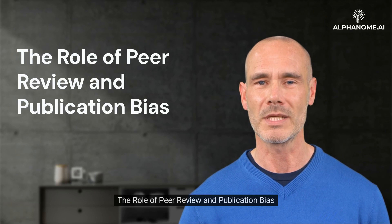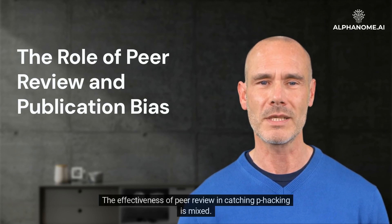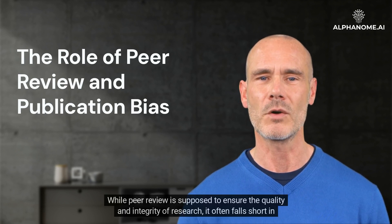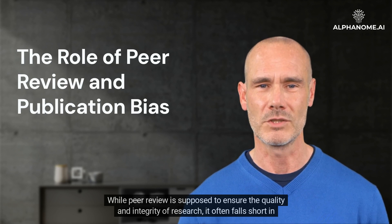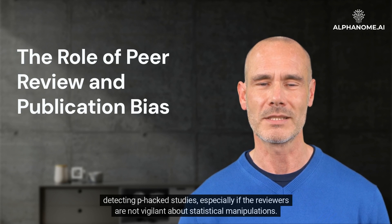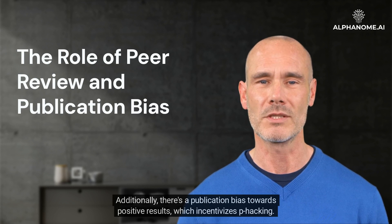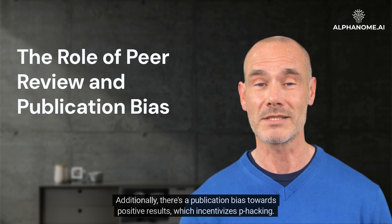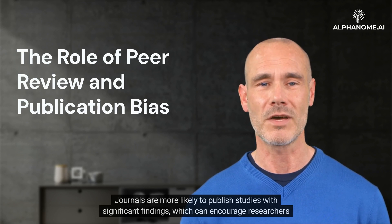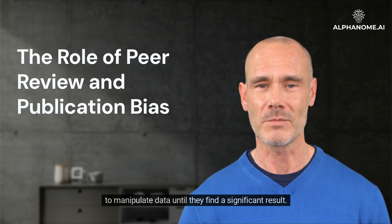The role of peer review and publication bias. The effectiveness of peer review in catching P-Hacking is mixed. While peer review is supposed to ensure the quality and integrity of research, it often falls short in detecting P-Hacked studies, especially if reviewers are not vigilant about statistical manipulations. Additionally, there's a publication bias towards positive results, which incentivizes P-Hacking. Journals are more likely to publish studies with significant findings, which can encourage researchers to manipulate data until they find a significant result.